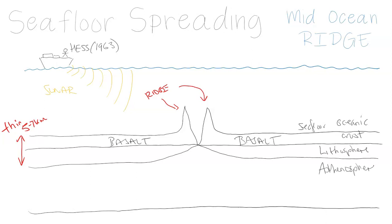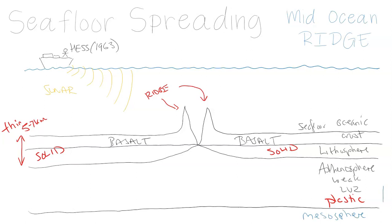We're looking at the physical layers of the Earth, which we've covered in a different video in greater detail. The asthenosphere is that weak area that also contains the LVZ. What you essentially have is this solid crust technically floating on a soft, plastic layer — the asthenosphere. Below that we can also identify the mesosphere, which is part of the lower mantle. This is all part of the upper mantle.